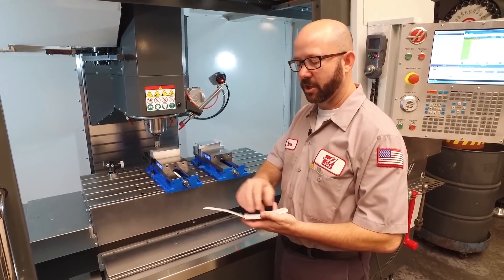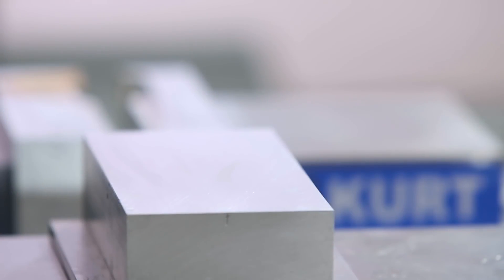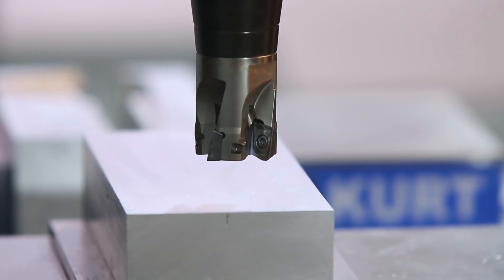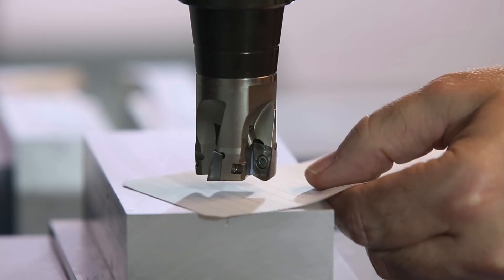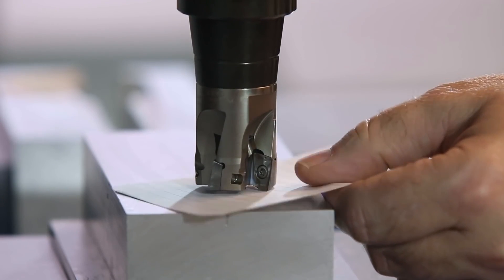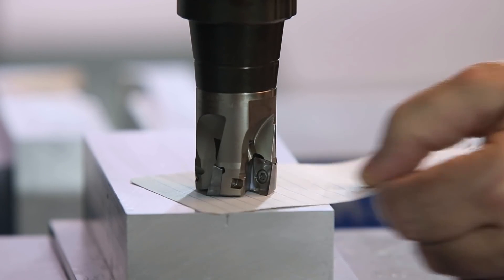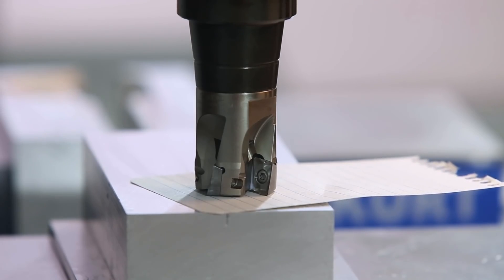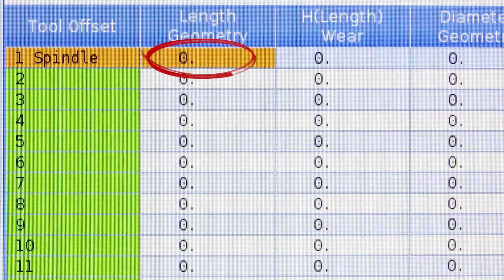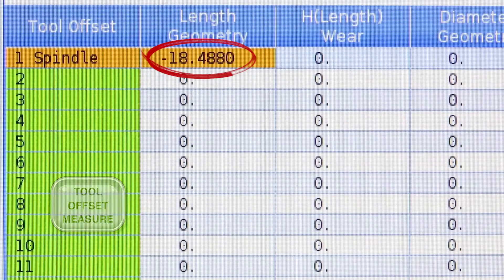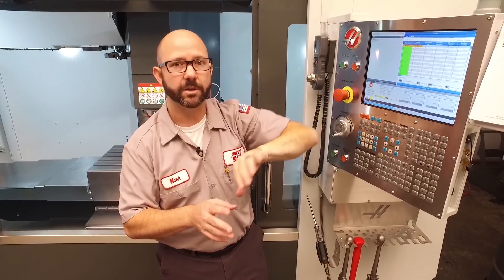So, at this point, I'm going to show you guys how to touch off with paper. Now, there are lots of different methods. We're just going to show you this one first. With tool one in the spindle, I'm going to jog down right above the part, switch it into .001 jog increment. Then I'm going to jog down with a sheet of paper in between the part and the tool. I'm going to move down slowly, one click at a time, while pulling the paper back and forth. Now, as soon as I start to feel this paper drag, I know that the tool is pinching the part and it's where it should be.